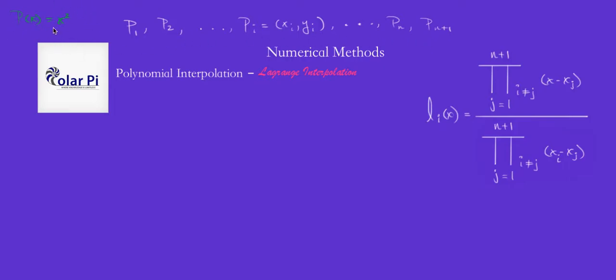So for this quadratic, we need to know three points on it. But given those three points, we can use Lagrange polynomials defined through these LIs to interpolate, that is to get to this polynomial or any other polynomial.